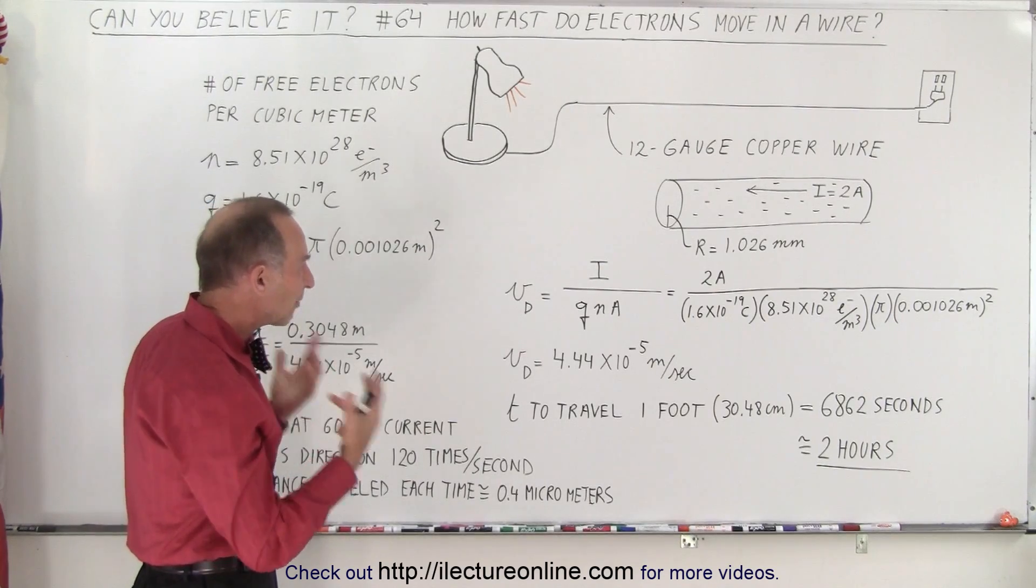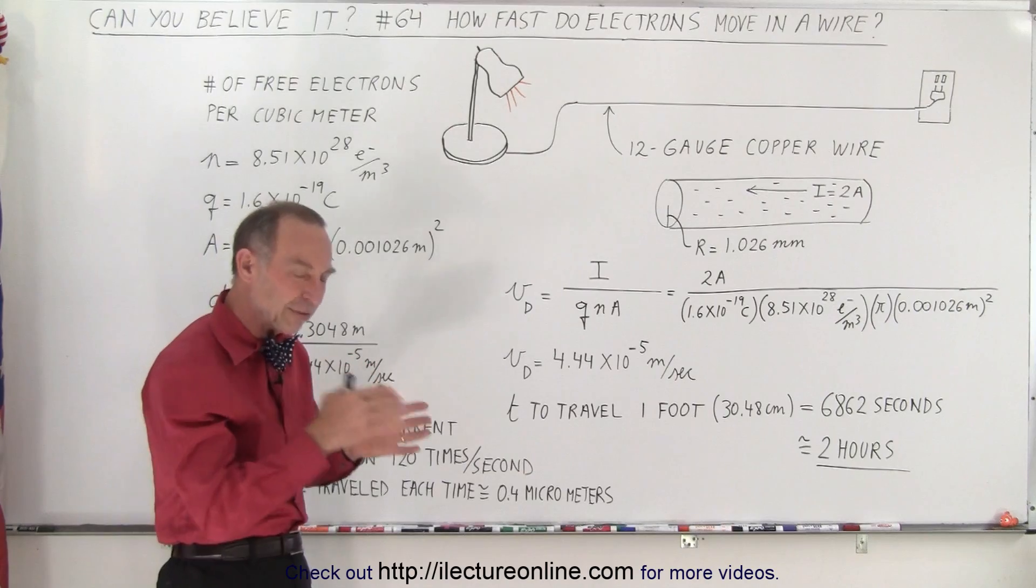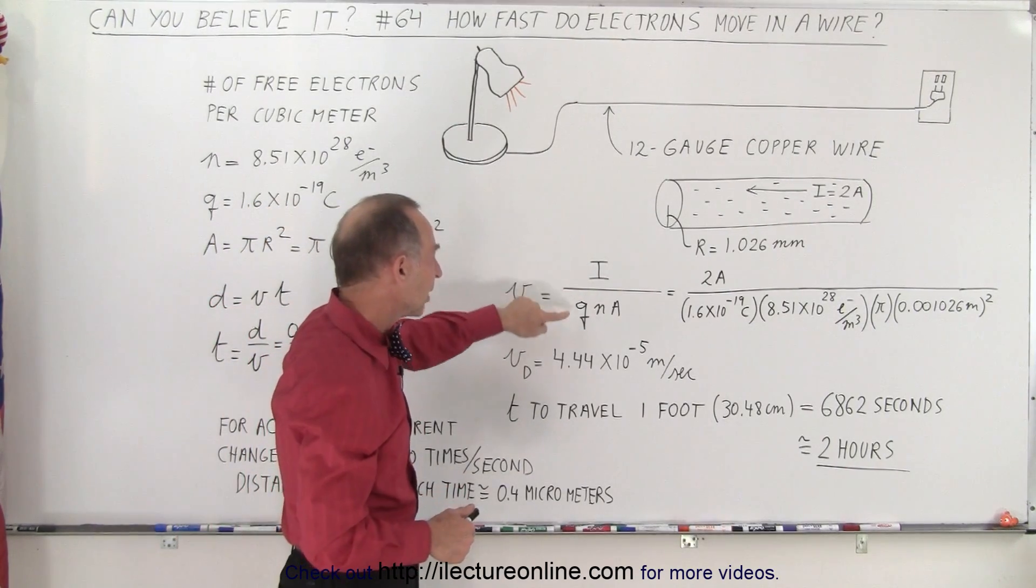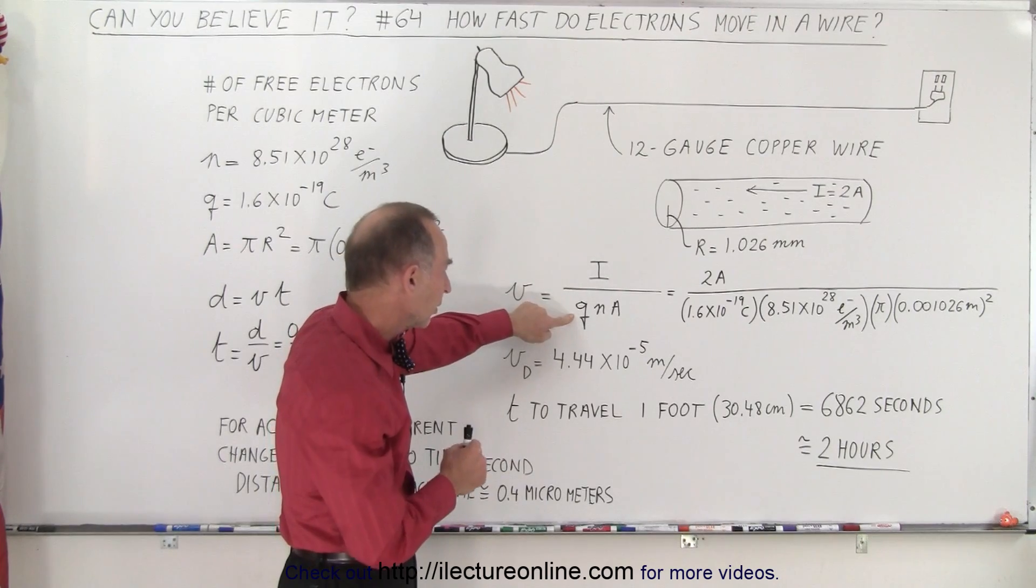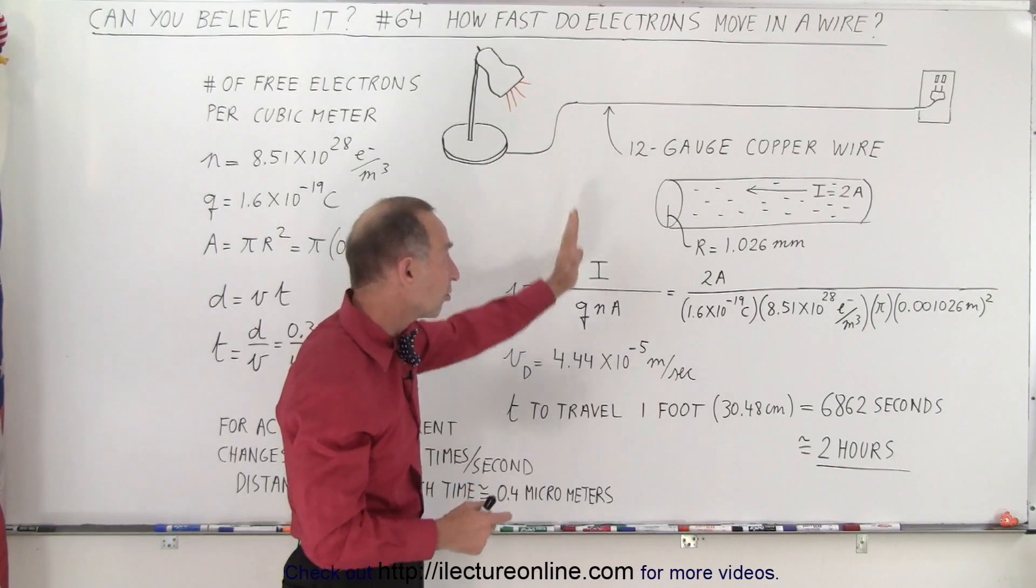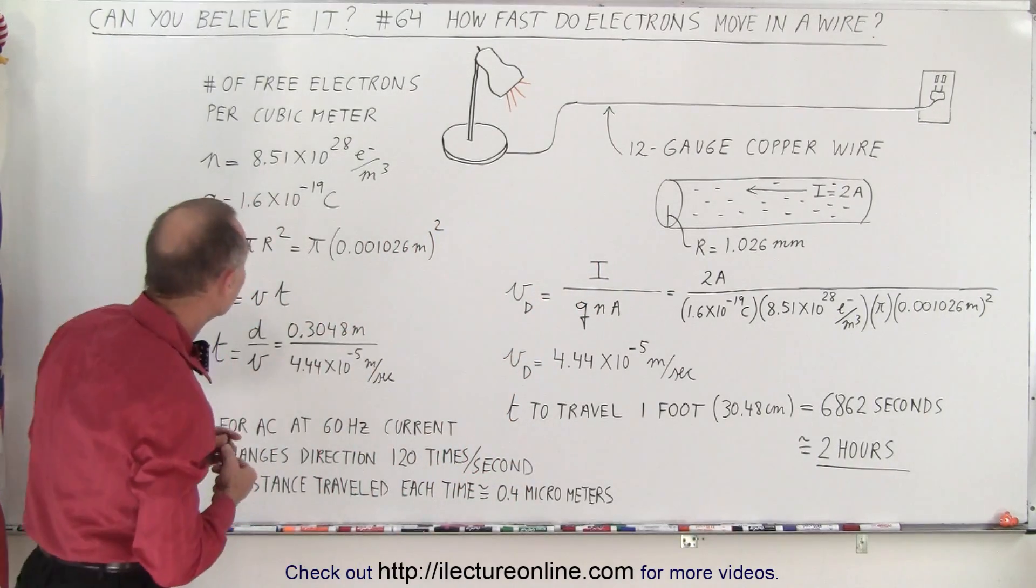We have this equation that tells us that the drift velocity, and they do call it drift velocity, is equal to the current in the wire divided by the charge per electron times the number of electrons per cubic meter times the cross-sectional area of the wire through which it travels.